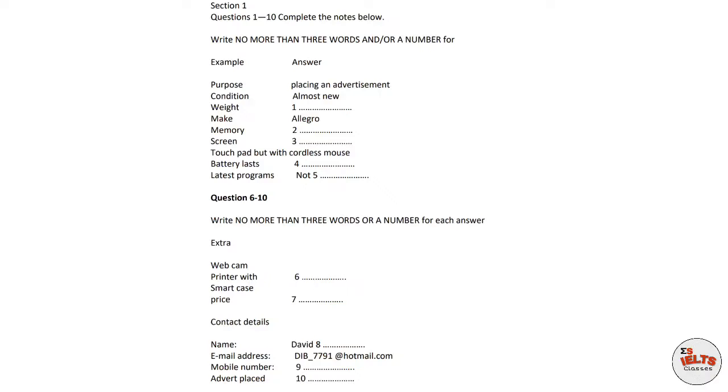In this test, you will hear a number of different recordings, and you will have to answer questions on what you hear. There will be time for you to read the instructions and questions, and you will have a chance to check your work. In the IELTS listening test, the recordings will be played once only. The test is in four sections. At the end of the test, you will have ten minutes to transfer your answers to an answer sheet. Now turn to section one.